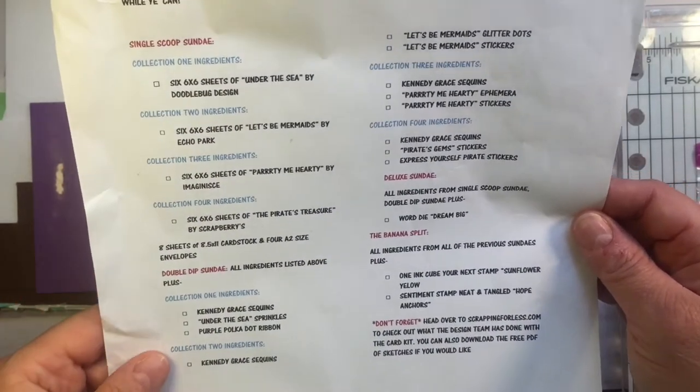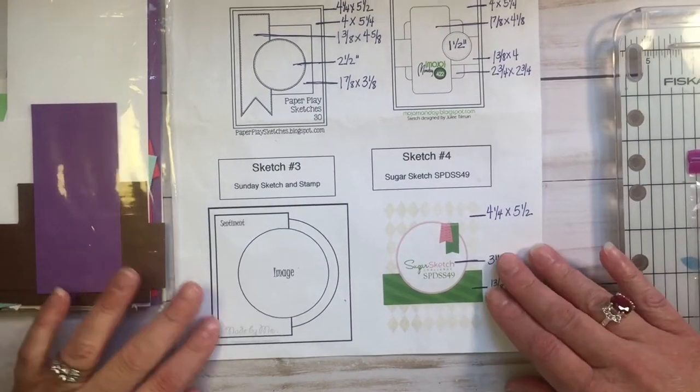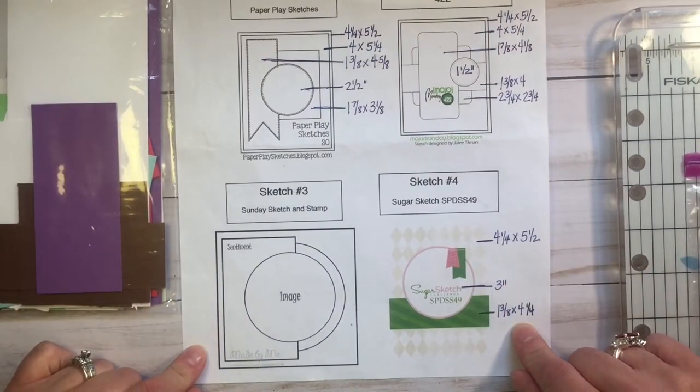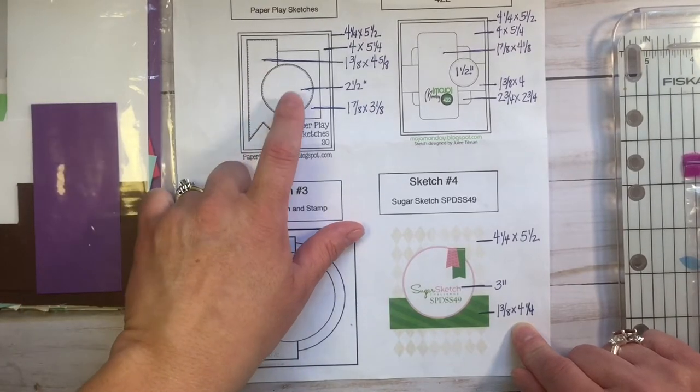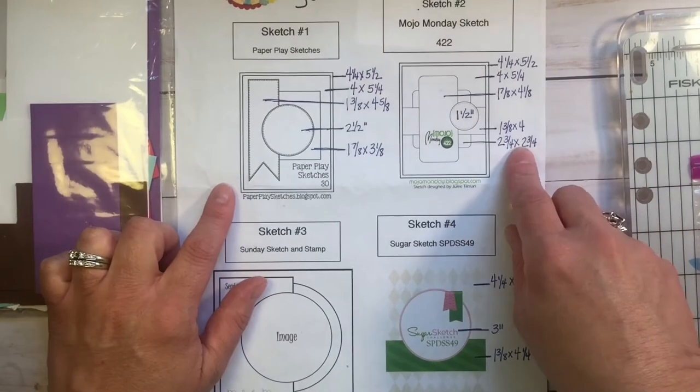So, we're going to use the single scoop and the double dip, and I'm going to use collection one. I've already done my cards with two, three, and four, and I have collection one left. I kind of worked backwards this month.